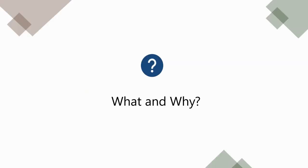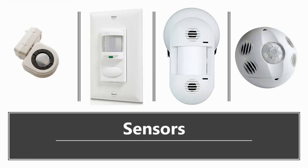First things first — what are occupancy sensors and why do we use them? Occupancy sensors are devices that sense when a person enters a room or a space. They are connected to the building's lighting directly or tied into a lighting control system, and can even be used with HVAC systems.